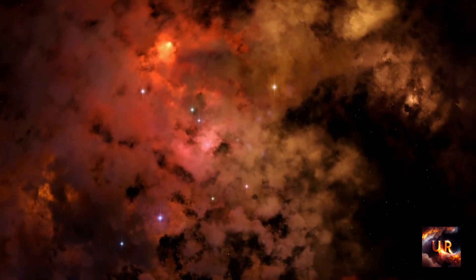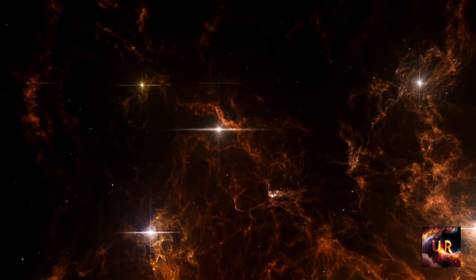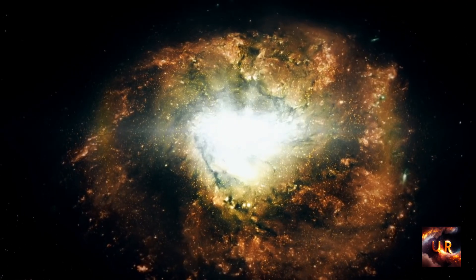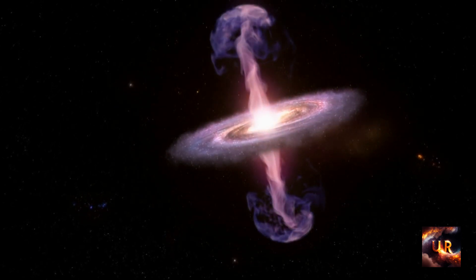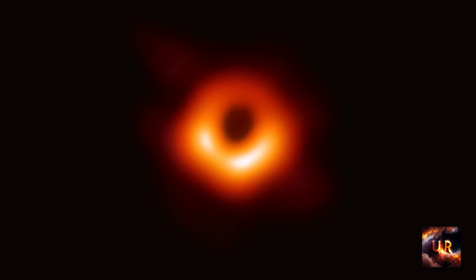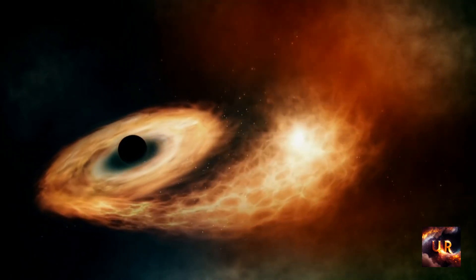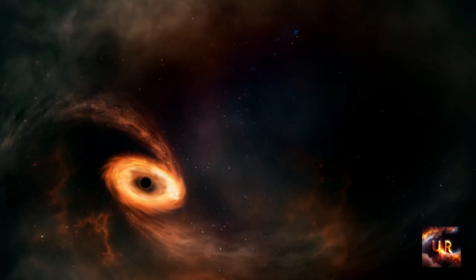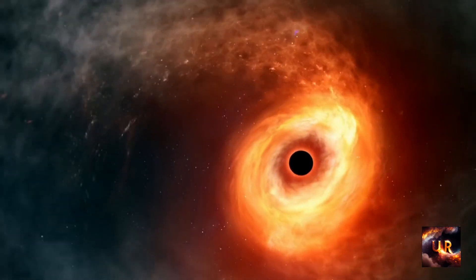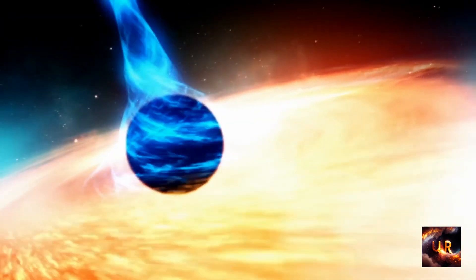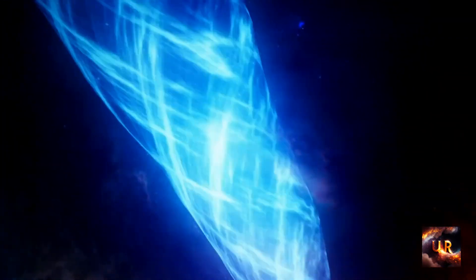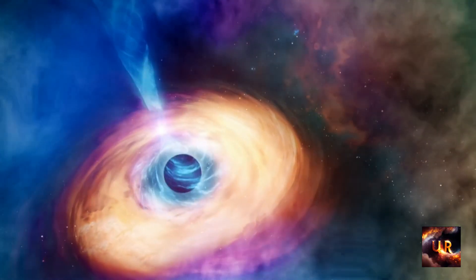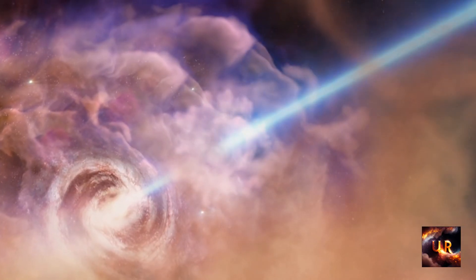One black hole that is relatively close to Earth is V616 Monocerotis, also known as A062000 or the Monoceros black hole. This black hole is located about 3000 light years away from Earth in the constellation Monoceros, the unicorn. V616 Monocerotis is a stellar black hole, which means that it formed from the collapse of a star. It has a mass of about 7.7 times the mass of the Sun, making it one of the smaller black holes known to scientists. V616 Monocerotis was first discovered in 1975 when it was observed emitting X-ray bursts, indicating the presence of a compact object with a strong gravitational field. Further observations and analysis confirmed that the object was a black hole.